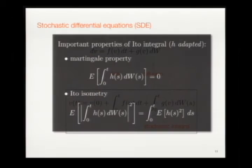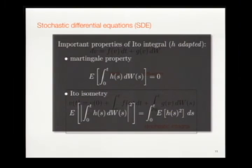What you need to pay attention to is the martingale property. If you fix one omega — one realization of the random variable — you have a deterministic PDE with a source term. This source term has magical cancellation properties coming precisely from the martingale property of the Itô integral, enabling rather interesting results for these stochastic PDEs.